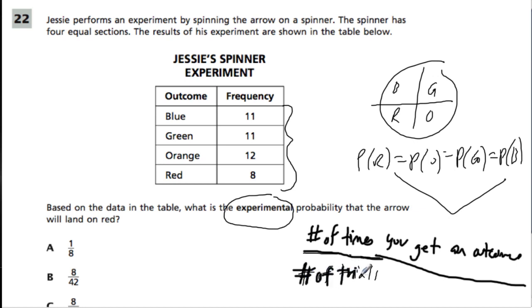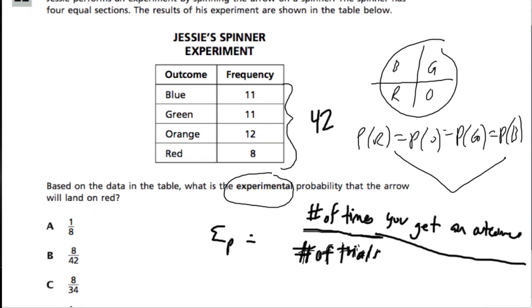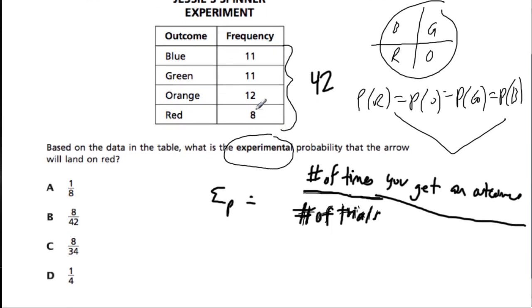So the experimental probability is what actually happens. Here we have 10, 20, 30, 42 trials. And we landed on red eight times. So we have an 8 out of 42 chance of actually getting a red, which is what we had here.